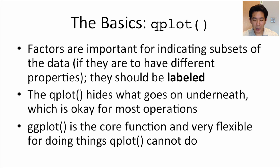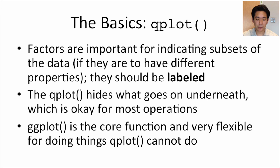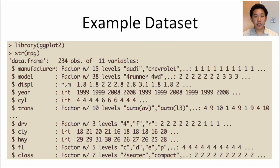The qplot function is fairly straightforward and easy to pick up. It hides a lot of the details of what ggplot is doing underneath, which is fine for many cases. But the ggplot function is the core function of the system — it's very flexible and can be used in combination with a lot of things that qplot can't do. I'm going to start with the MPG dataset, which comes with the ggplot2 package — you can load it after installing the package. This dataset looks at miles per gallon for a variety of different types of cars.